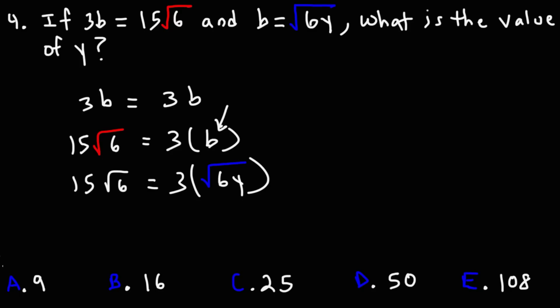So, now, let's go ahead and solve this. I'm going to break down 15 into 5 and 3. Rather than taking the square of both sides. Because if I did that, I would just get larger numbers. Notice that if we divide both sides by 3, we can cancel the 3. So, we have 5 square root 6 is equal to the square root of 6Y.